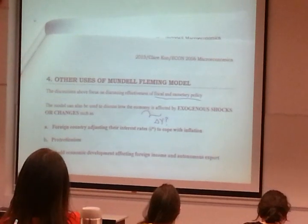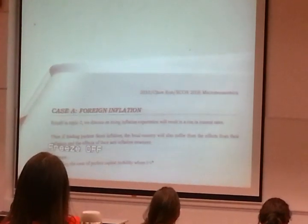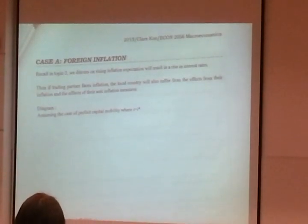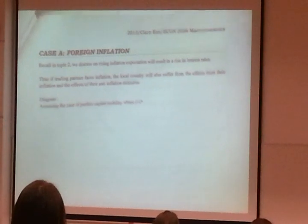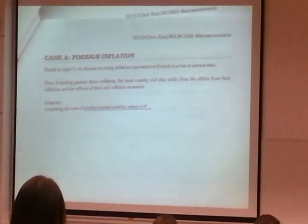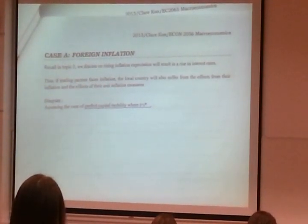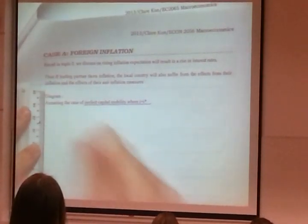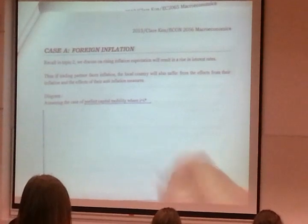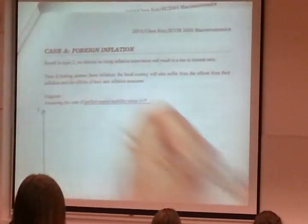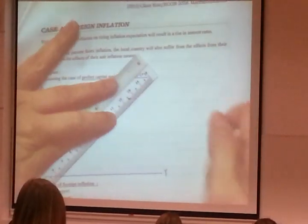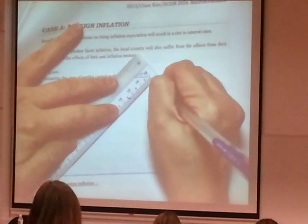So let's look at case A. For case A, we are going to make an assumption. An examiner will usually give you an assumption. So in this case, it's perfect capital mobility, horizontal BP. So in your page 20, put in the diagram, put in your IS and LM.